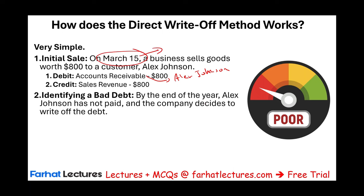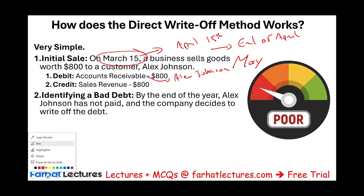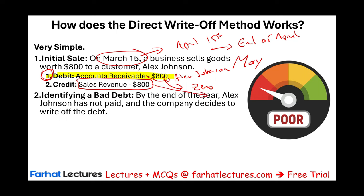At the end of the year, Alex did not pay his bill and the company decides to write off the account. We made the sale in March, gave Alex until April 15th in good faith. We called and Alex kept asking for more time — end of April, then end of May. We waited through June, July, August, kept calling and sending letters. At the end of the year, we concluded Alex is no longer going to pay.